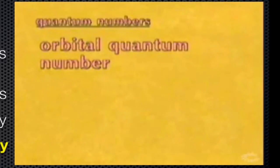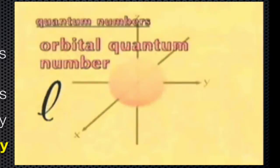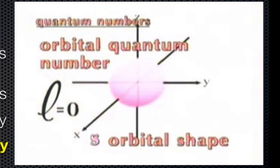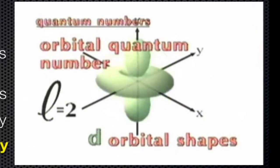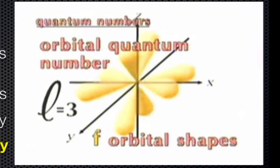The second quantum number, L, refers to the shape of the orbital. There are four important shapes, each with a slightly different energy. All S-shaped orbitals are spherical. P are dumbbell-shaped. And the D and F orbital shapes are more complicated, as shown in these drawings.